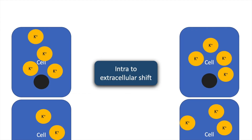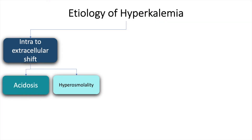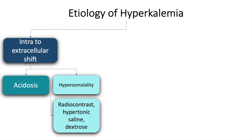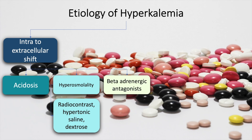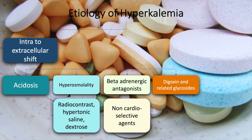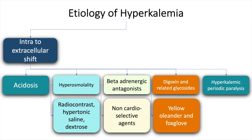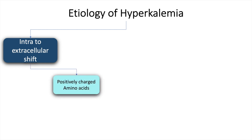Intra-to-extracellular shifts occur when potassium from within the cell shifts outside, thereby increasing potassium in the serum. This may occur because of acidosis, hyperosmolality — which may occur because of radio contrast agents, hypertonic saline, or dextrose — beta-adrenergic antagonists (specifically non-cardioselective agents), digoxin and related glycosides such as yellow oleander and foxglove, and hyperkalemic periodic paralysis.